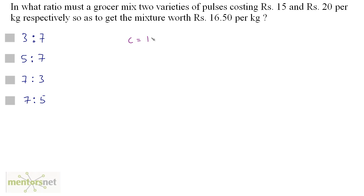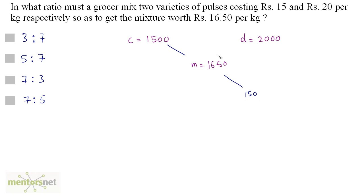The cheaper variety costs Rs.15, that's Rs.1500, and the costlier variety costs Rs.20, that's Rs.2000. The cost of the mixture, the mean price, is Rs.1650. On the right hand side, the difference between the mean price and the cheaper price is Rs.1650 - Rs.1500 = Rs.150. On the left hand side, the difference between the costlier and mean price is Rs.2000 - Rs.1650 = Rs.350. So the ratio of the quantity of the cheaper variety to the quantity of the costlier variety equals 350 by 150.